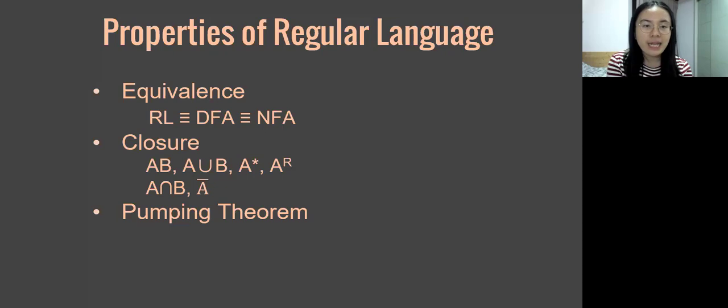By properly constructing the DFA, it can be shown that regular language is closed under complementation and intersection. This is quite different from a context-free language introduced later. To prove a language non-regular, apart from transforming the language into another one by the closure property, there is also a sophisticated approach using the pumping theorem.